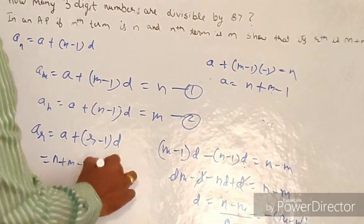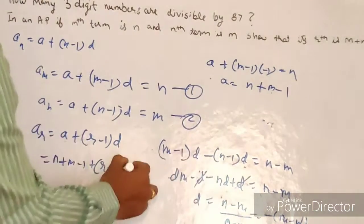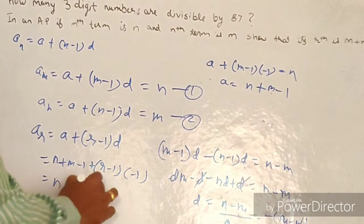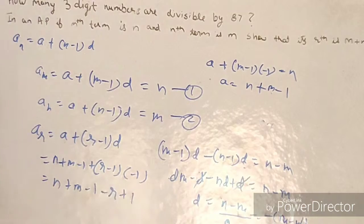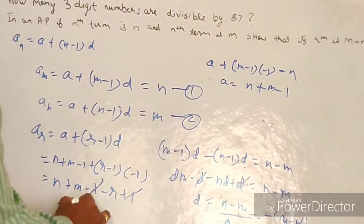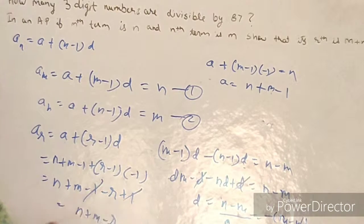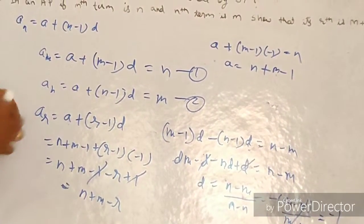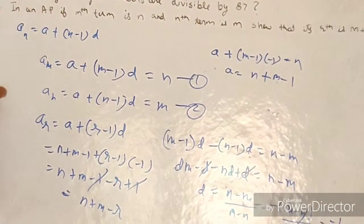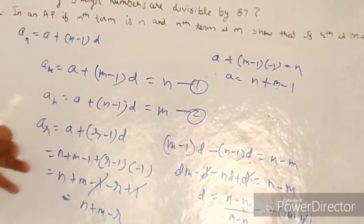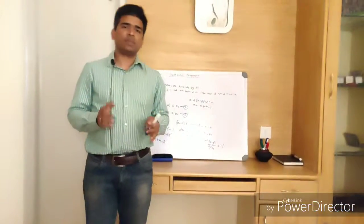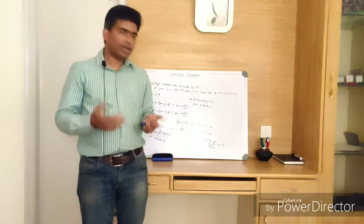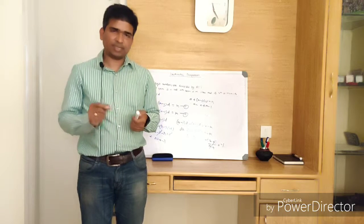Now substituting a = m + n − 1 and d = −1 into the rth term formula: a(r) = (m + n − 1) + (r − 1)(−1) = m + n − 1 − r + 1. The −1 and +1 cancel, giving a(r) = m + n − r. This is exactly the expression we needed to prove. Whatever general formula we learned, we applied the same to answer these questions.